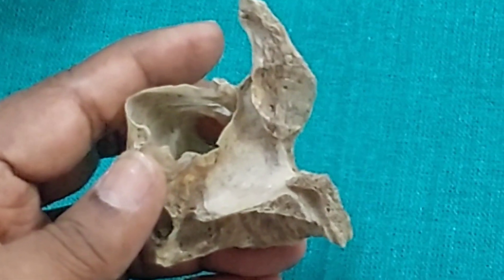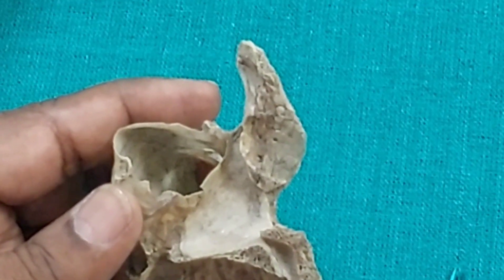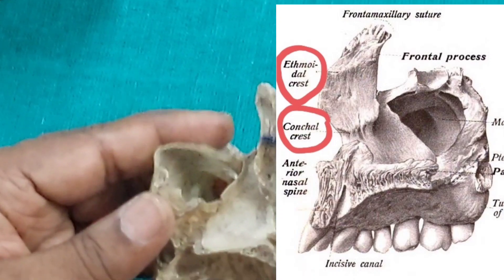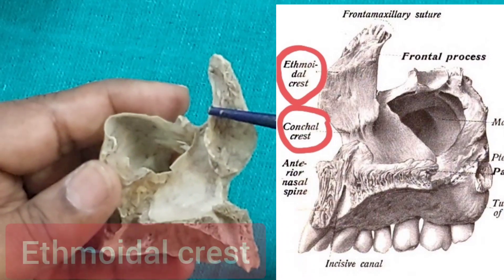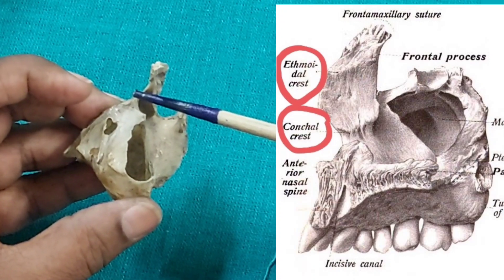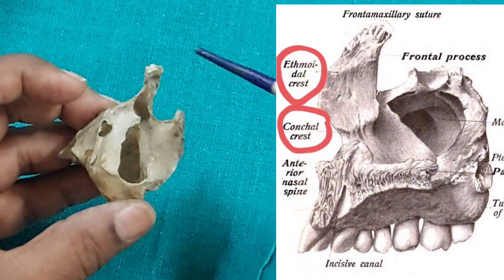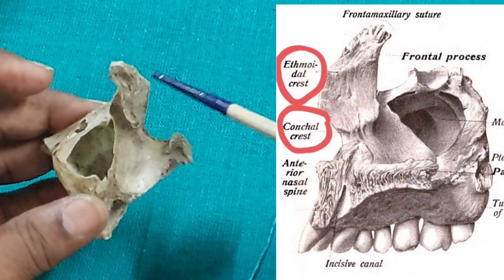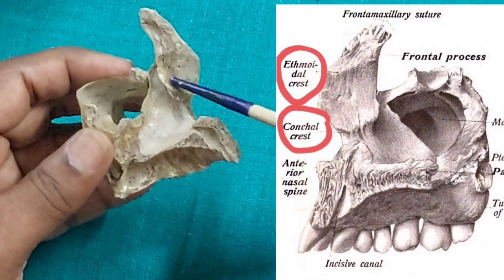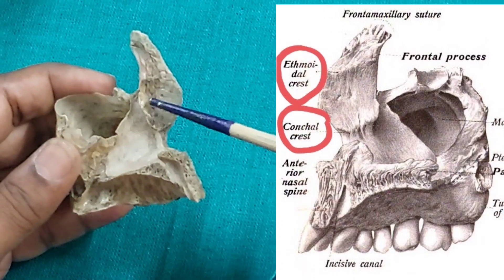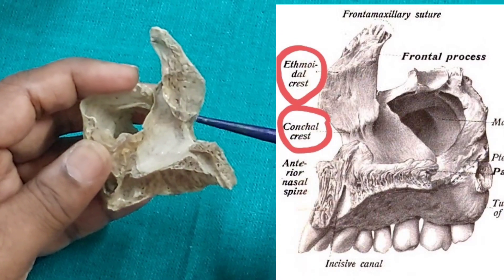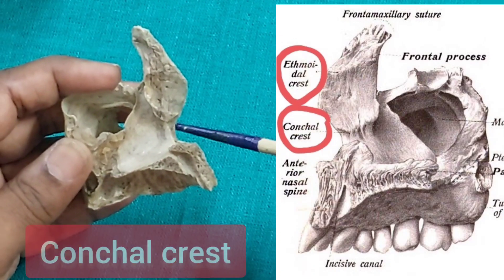On the medial surface of the frontal process there are two crests. The upper one is the ethmoidal crest; its posterior part articulates with the middle nasal concha, while its anterior part is non-articular and forms the agger nasi. Below the ethmoidal crest is a depression called the atrium of the middle meatus of the nose, and below that is another crest called the conchal crest.